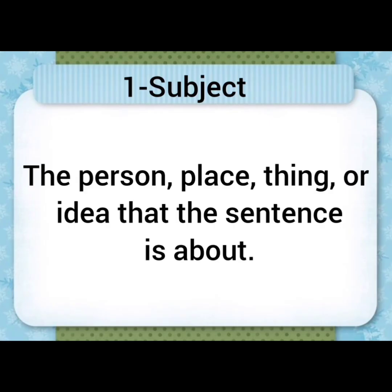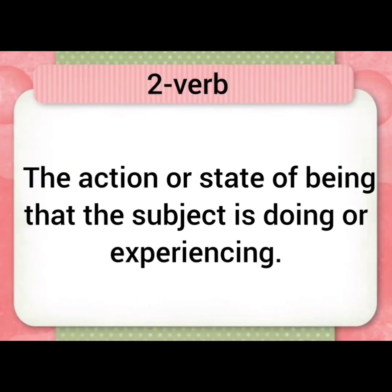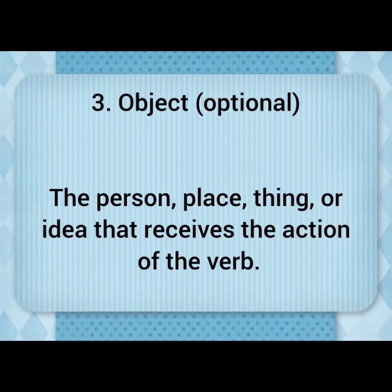Let me start with the subject. The person, place, thing or idea that the sentence is about is known as subject. The action or state of being that the subject is doing or experiencing is known as verb. Object is optional in a sentence. The person, place, thing or idea that receives the action of the verb is known as object.